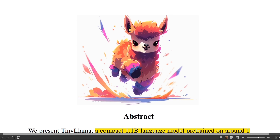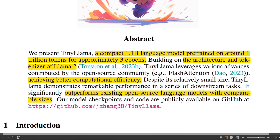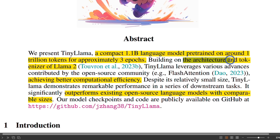And this is probably the cutest Llama that I have seen. Now why is this even important? Well, it's a compact 1.1 billion parameter model that is trained on 1 trillion tokens for approximately 3 epochs. The architecture of this Tiny Llama is exactly the same as the Llama 2 model, and it's also using the same tokenizer. But the best part is both the model weights as well as the training and inference code is open source.